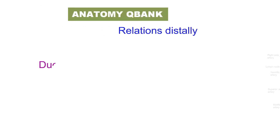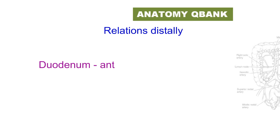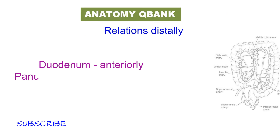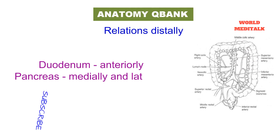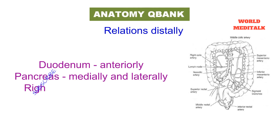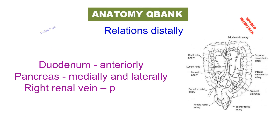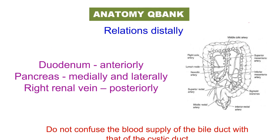In its distal relations, the duodenum lies anteriorly, the pancreas lies medially and laterally, and the right adrenal vein lies posteriorly.